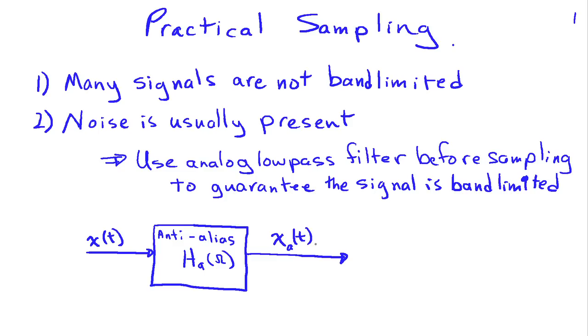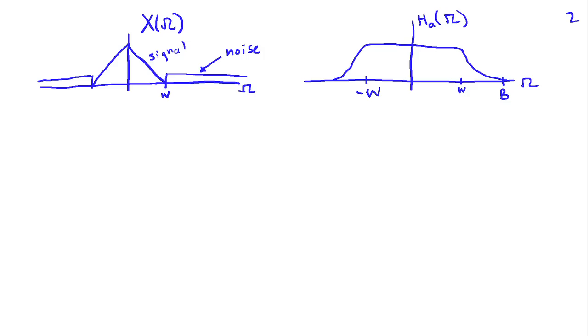which now should be band-limited by virtue of use of this filter so that we can sample it at intervals of NT where T is chosen based on not the bandwidth of the original signal X of T, but the effective bandwidth of our anti-aliasing filter HA of omega. And this will then give us our sampled signal X of N. So let's look at a little example illustration of this.